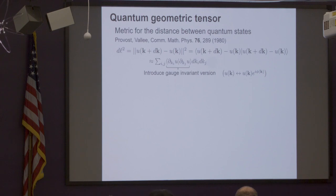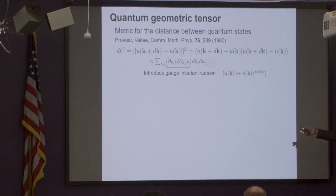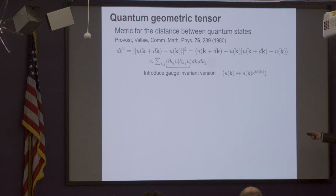One can think also that we have the Hilbert space that we know from quantum mechanics, and we want to analyze or characterize distances in our Hilbert space. So we can define the distance between two quantum states — a very generic quantum state that depends on some parameter k — and if you change it infinitesimally and calculate this, you should get something like a metric for the space of quantum states.